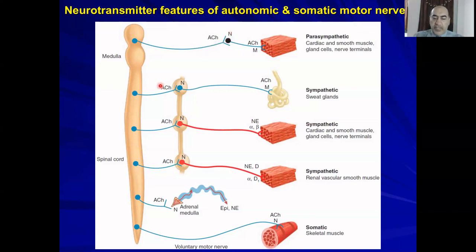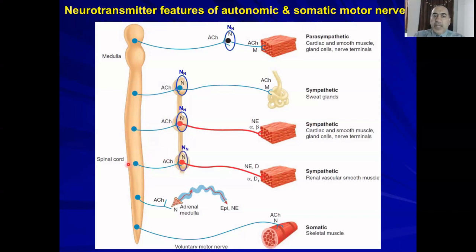Acetylcholine acts on nicotinic NN receptors in the ganglia, because these are in the ganglia they are called NN. This applies to both sympathetic and parasympathetic ganglia — the same: acetylcholine and nicotinic receptor coming directly from the CNS. The adrenal medulla is a kind of modified ganglia, so all of these are NN.